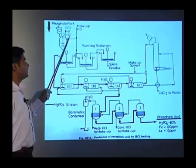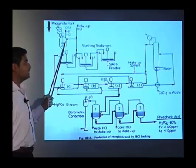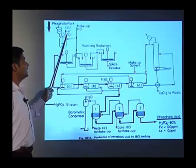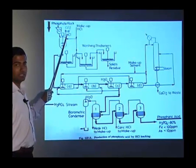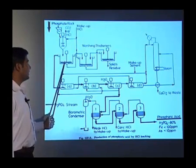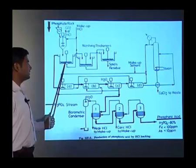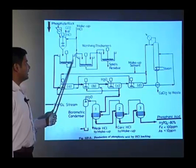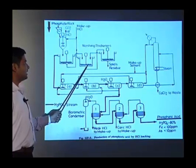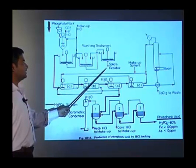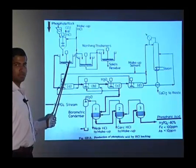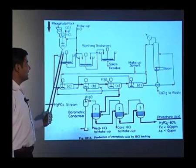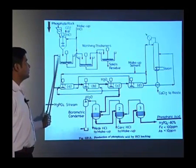Whatever HF and HCl are produced here, they are sent back and kept for acid recovery. Then we are adding the solvent in a counter-current manner. Here the mixture will be digested and the phosphoric acid will be produced.